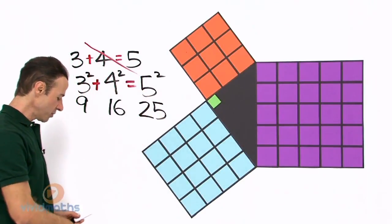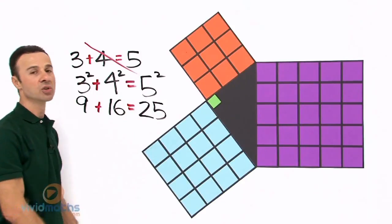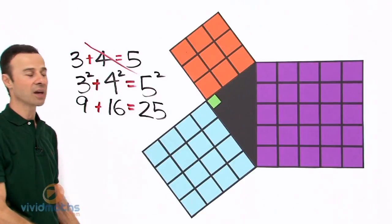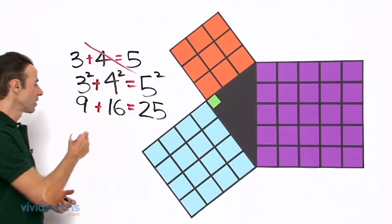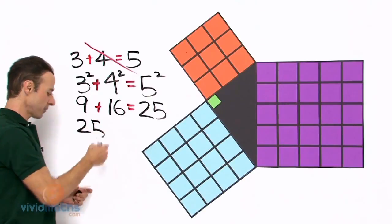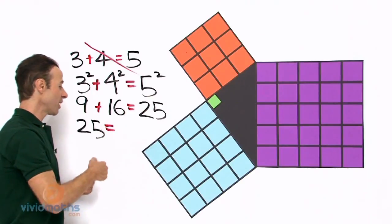Let's see if this holds true. We have 9 plus 16 equals 25. Let's see if that holds true right now. 9 plus 16, well that's 25. So we have here 25 equaling of course 25.